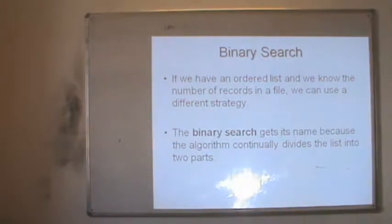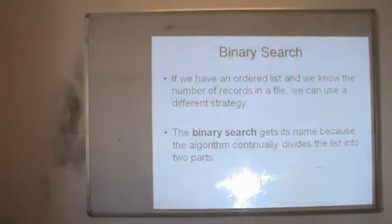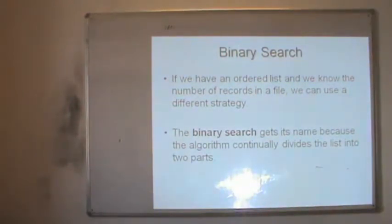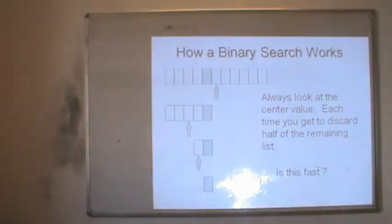Unlike linear search, there is another searching algorithm called binary search, for which the list must be in a particular order. If we have an ordered list and know the number of records in a file, we can use a different strategy. Binary search gets its name because the algorithm continuously divides the list into two parts.